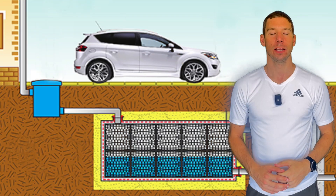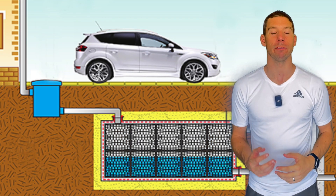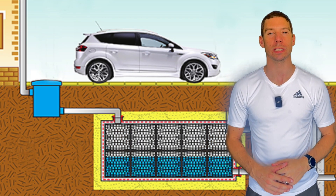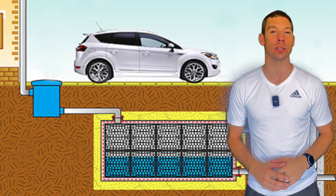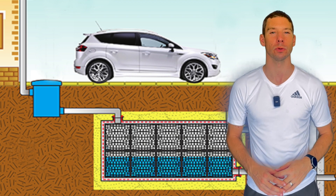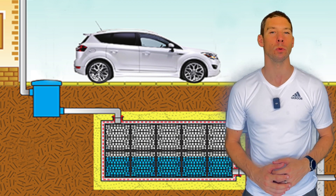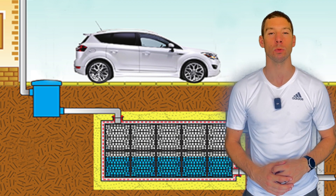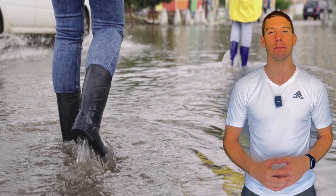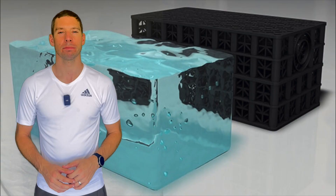Soakaways are areas where rainwater is allowed to naturally soak back into the soil, slowing down how fast rainwater gets back into the water cycle. This helps prevent flash flooding.